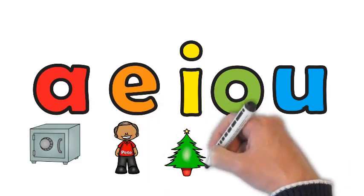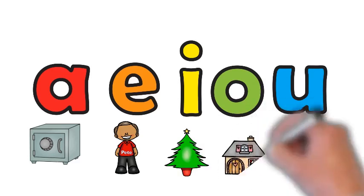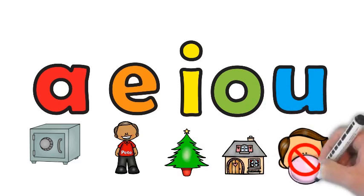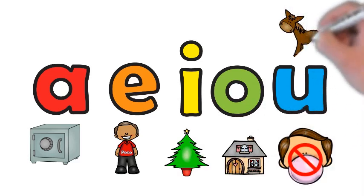The keyword for I is pine. The keyword for O is home. U has two keywords: rule and mule.